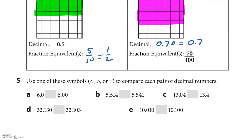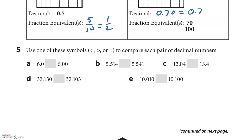Now for comparing — pause it and try a couple then unpause to see how you did. I'm going to make them have the same number of digits by attaching zeros as necessary. The first one is 6 point zero — attaching a zero shows it's equal. The next pair: five and five tenths vs. five point five one and five point five four — this one's bigger, so I put the less-than symbol because the first is less. Then: attaching a zero gives four hundredths vs. forty hundredths — thirteen and four hundredths is less than thirteen and forty hundredths.